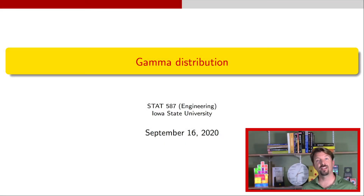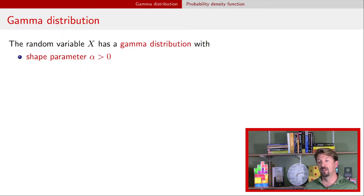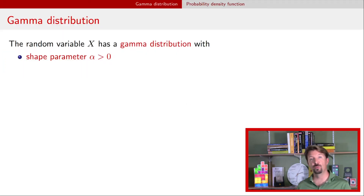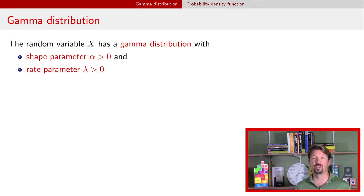Hi, I'm Dr. J, and this is a video about the gamma distribution, or gamma random variables. The gamma distribution has two parameters: a shape parameter, alpha, and a rate parameter, lambda. Both of these parameters must be greater than zero.